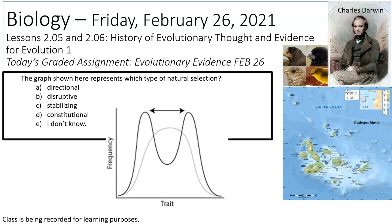It's Friday, February 26, 2021. We're going to do lessons 205 and 206. You do have an assignment today — it's called Evolutionary Evidence, February 26.